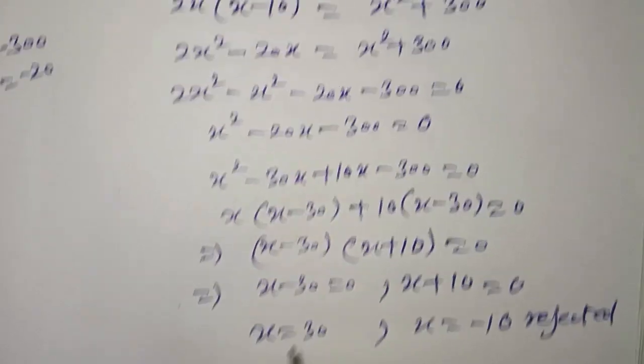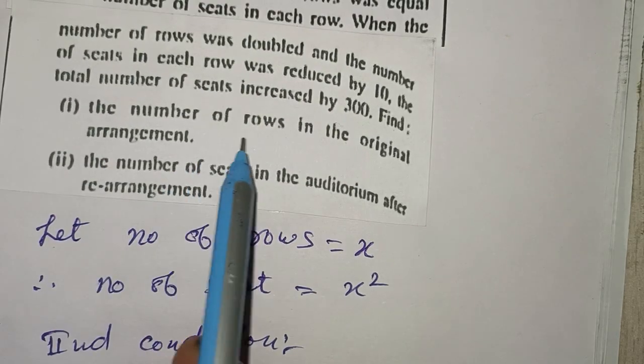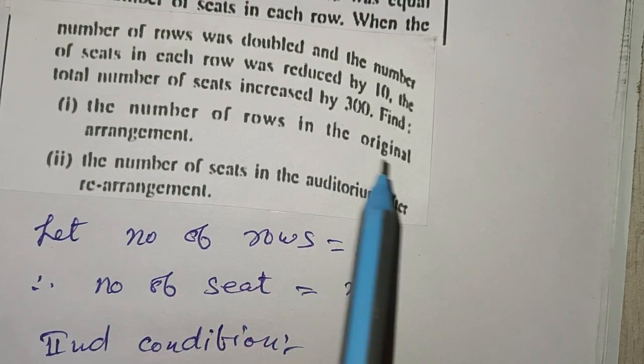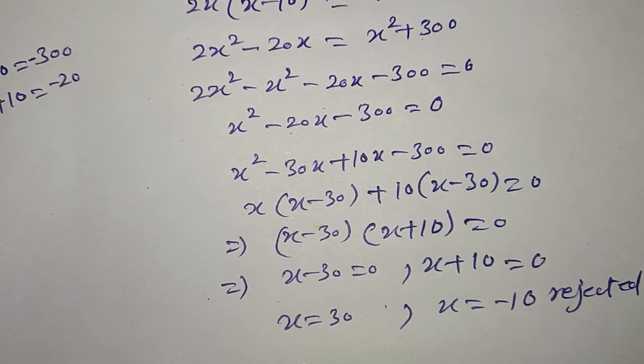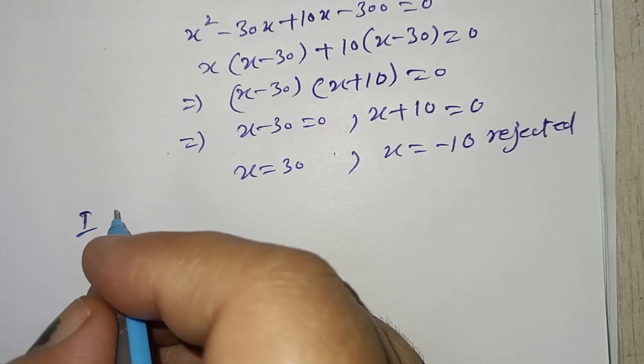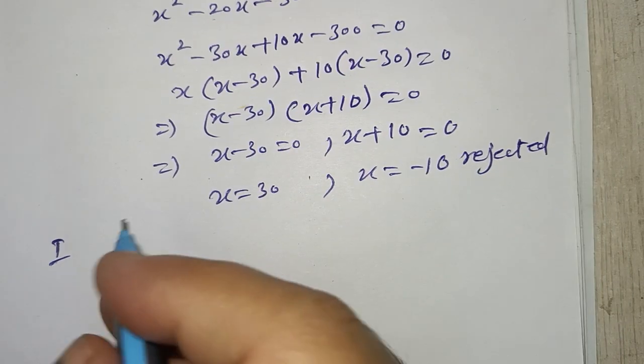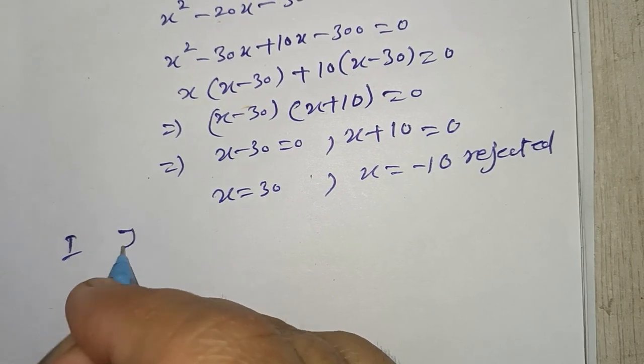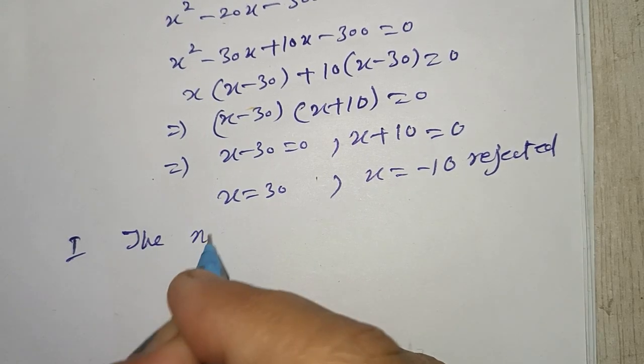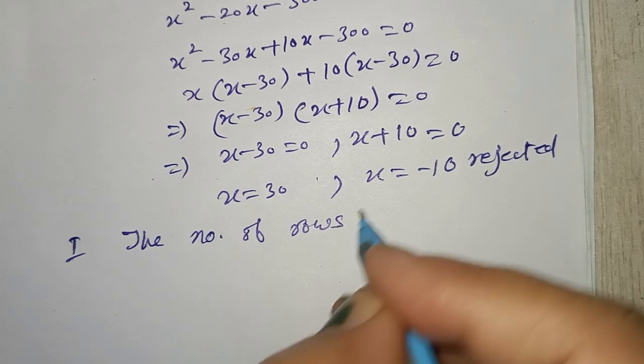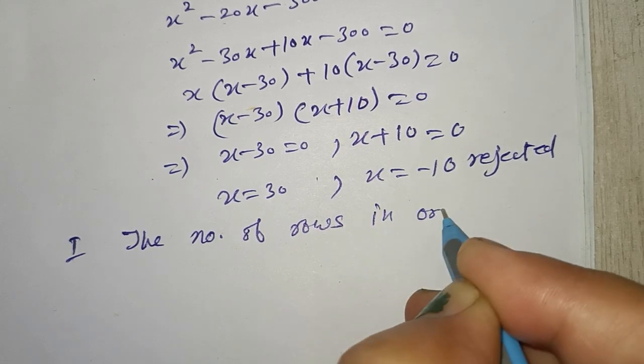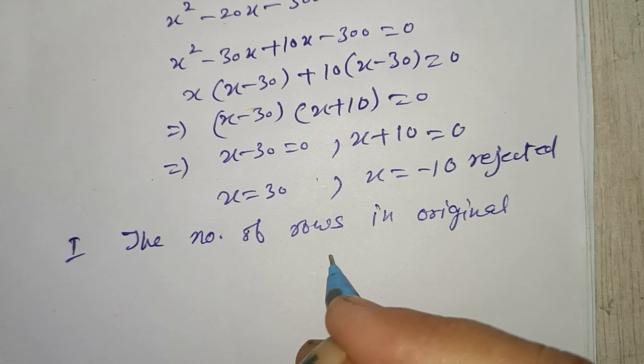The number of rows in the original arrangement: first part, the number of rows in the original arrangement = 30.